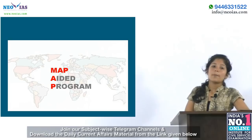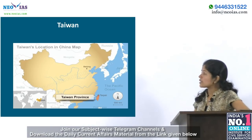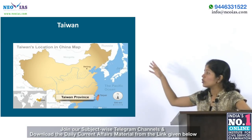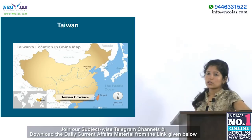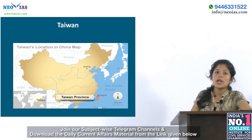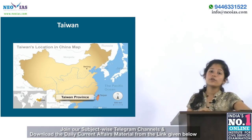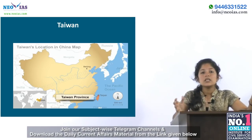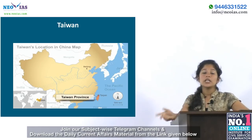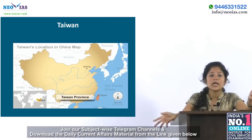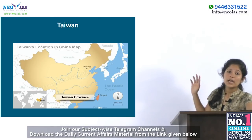Next we come to the Map Aided program, and today we will be seeing Taiwan. In this figure you can see this big country is China, and you can see a small country near to that — that is Taiwan. The Chinese president has called for a peaceful reunification with Taiwan. China still sees democratic Taiwan as a part of its territory to be reunified, despite the two sides being ruled separately since the end of a civil war in 1949.